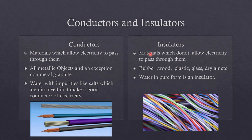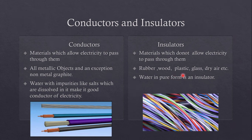Insulators — materials which do not allow electricity to pass through them are known as insulators. Like rubber, wood, plastic, glass, and dry air — these all are insulators. Water in its pure form is also an insulator. The outer covering of metal wires — made up of plastic or rubber — is an insulator, and this outer covering helps protect us from electric shock.